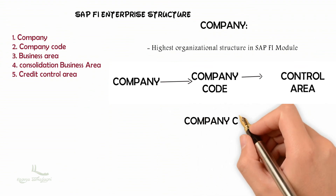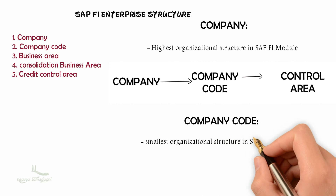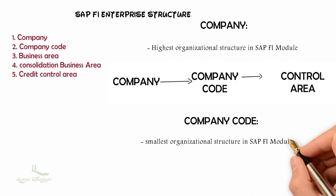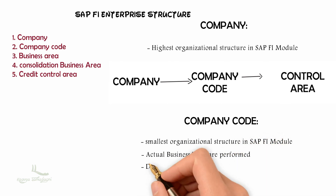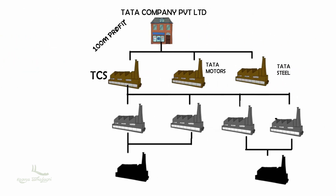Next we have Company Code. Company Code is the smallest organizational unit in the financial accounting module for which we draw financial reports for external reporting purposes. It is the organizational level at which actual business transactions are performed. Defining at least one Company Code is mandatory in implementing SAP — without the Company Code, we cannot implement SAP for an organization. This is one of the very important configurations in SAP. In our example, TCS, Tata Motors, and Tata Steel can be called Company Codes, because business transactions are performed at the individual Company Code level.